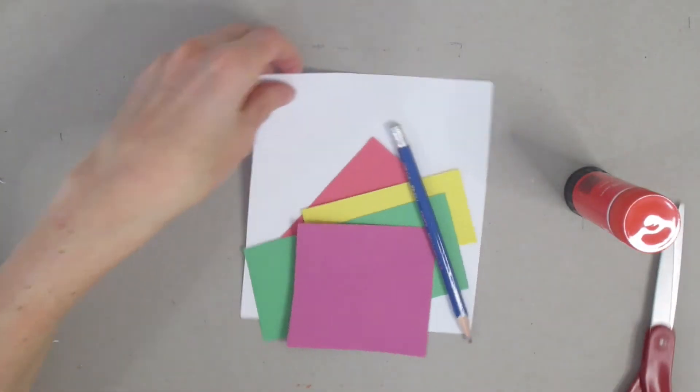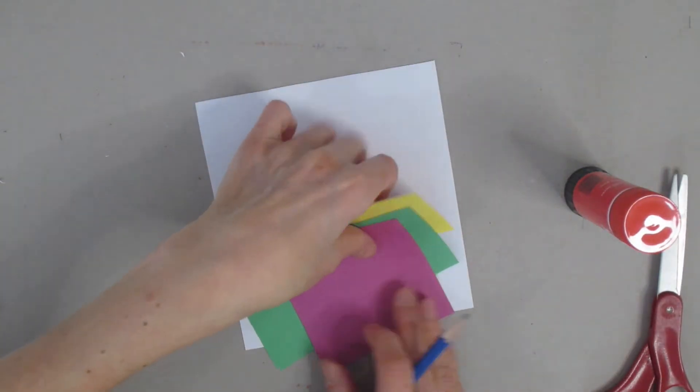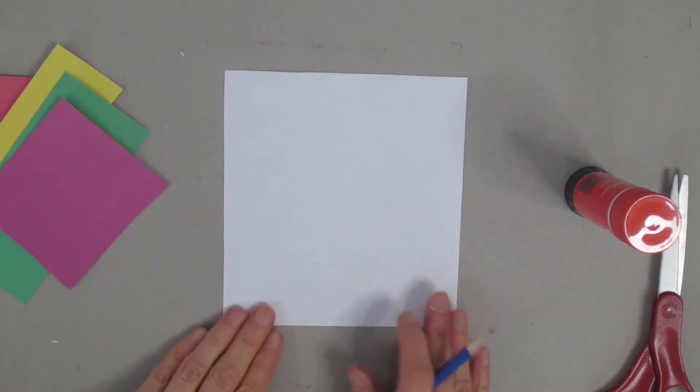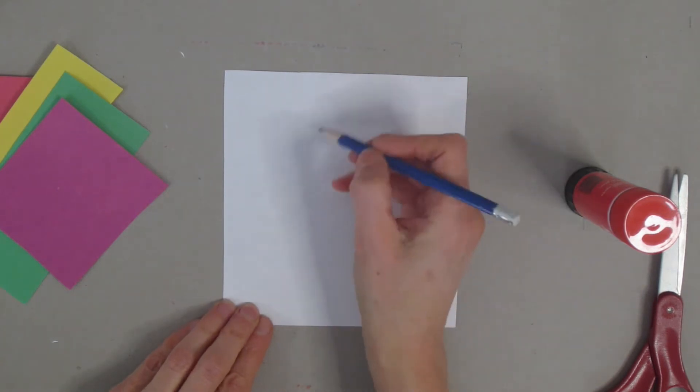Now we're going to grab that white piece of paper and get ready to draw our egg. You can draw a large egg, small egg, it doesn't matter what size your paper is - whatever size you choose will be the size of your egg.